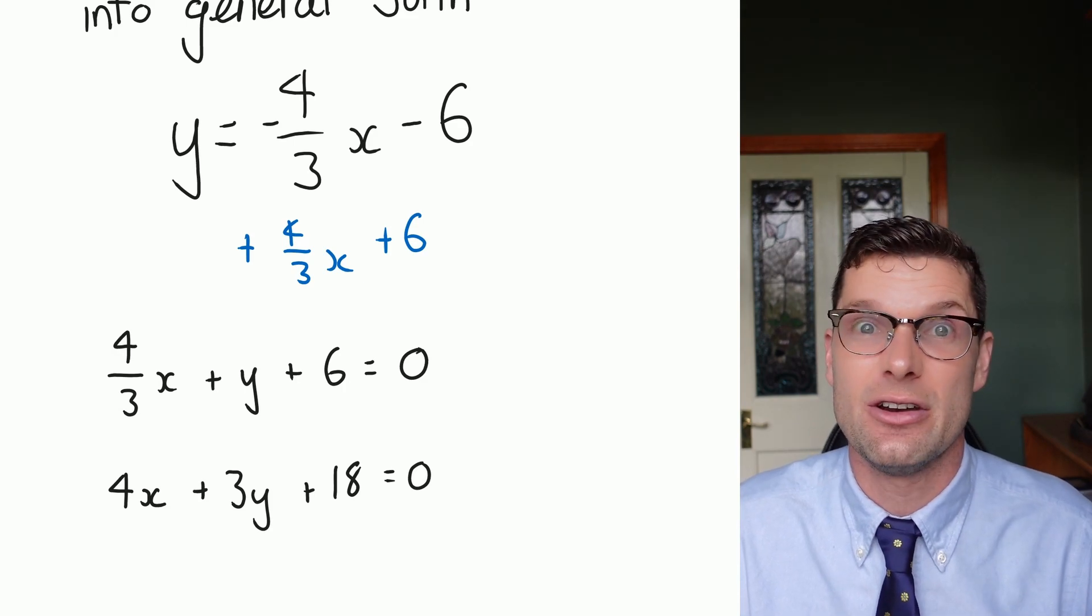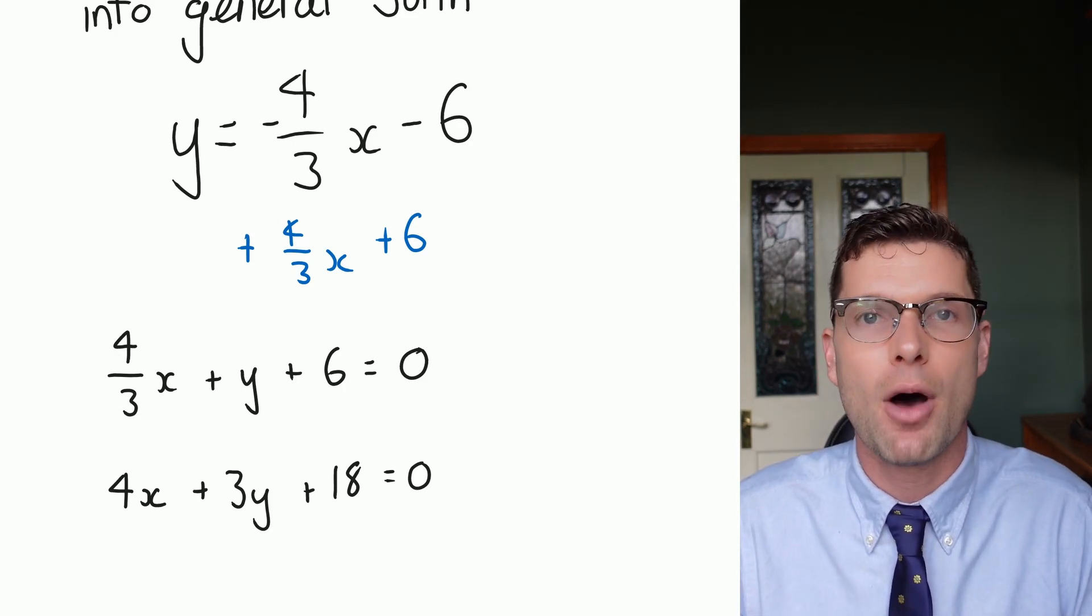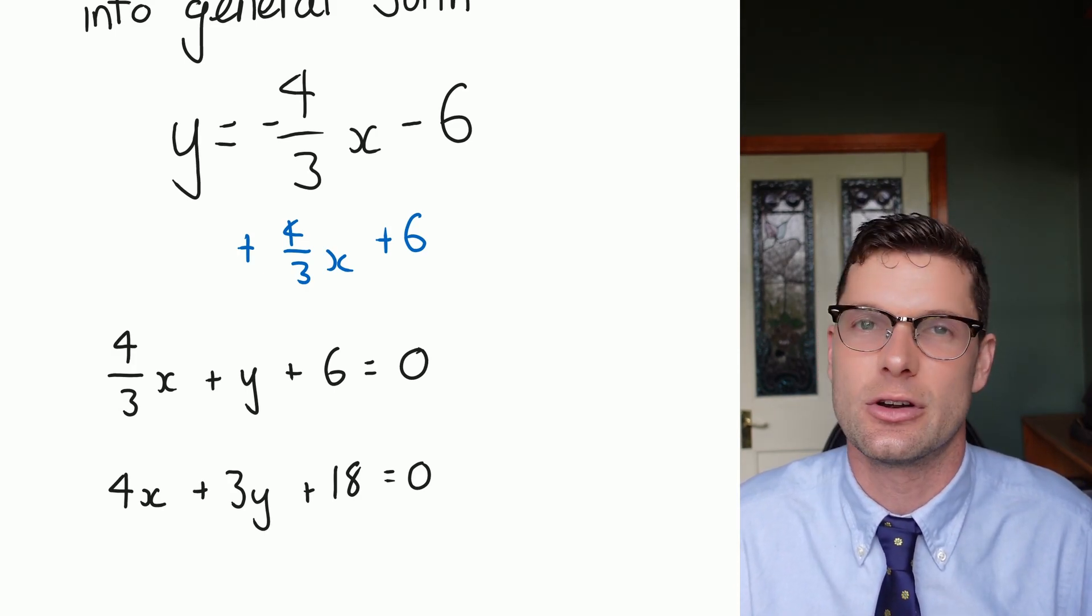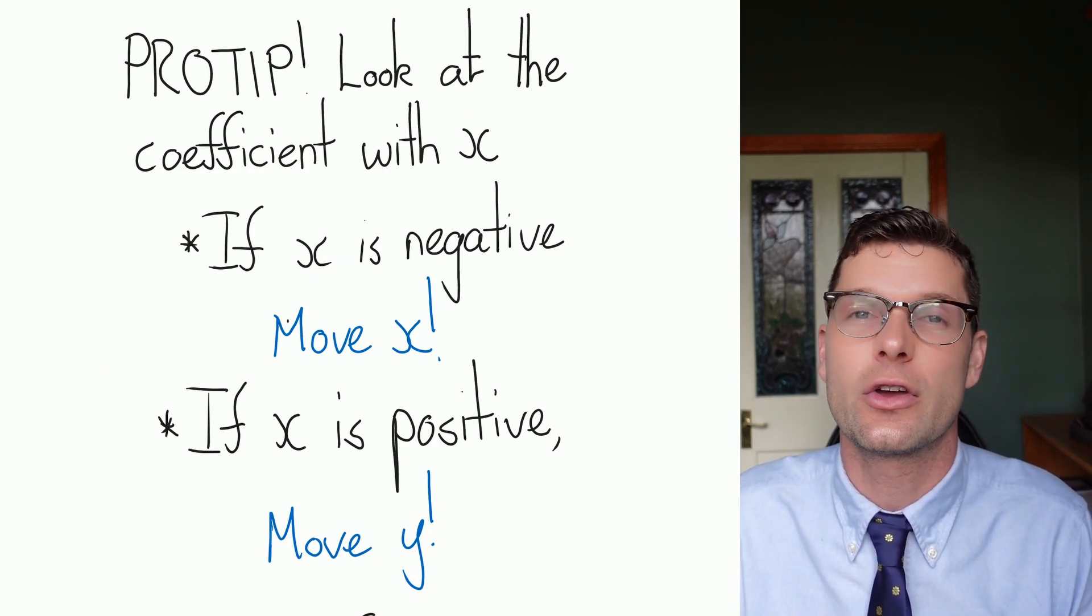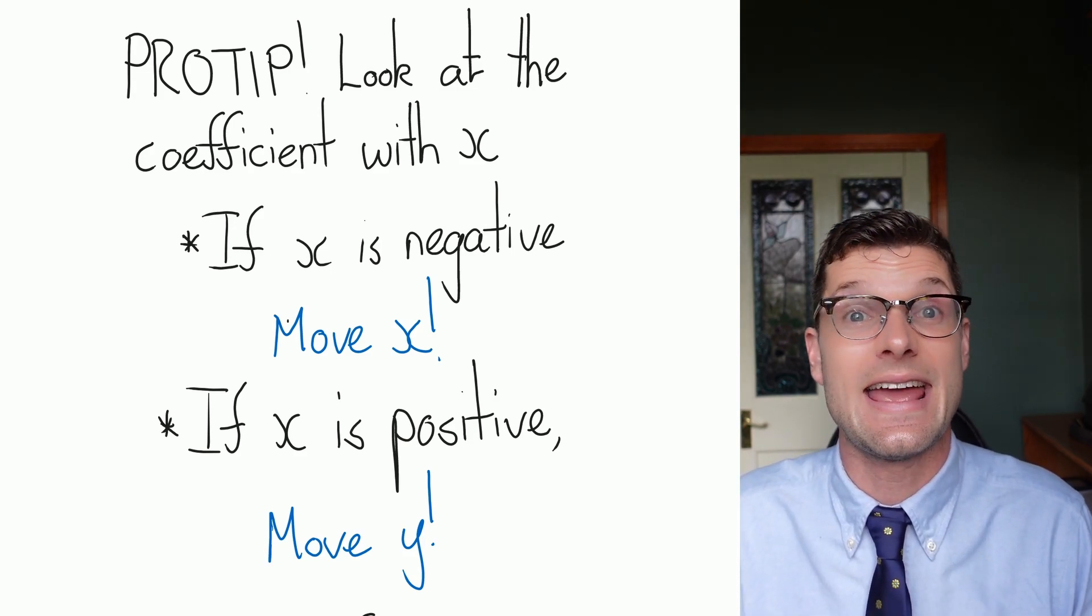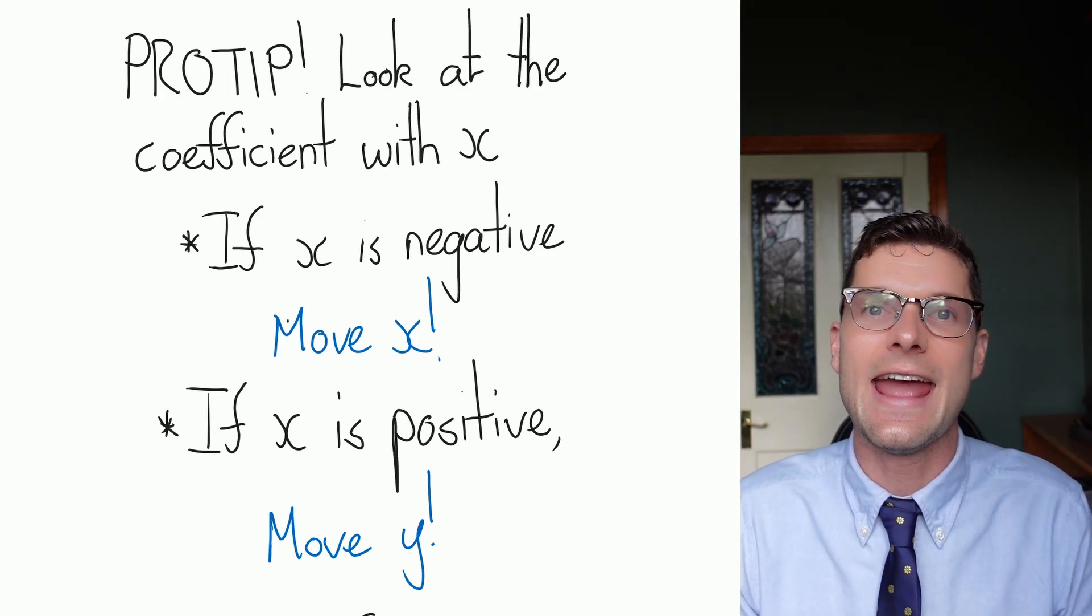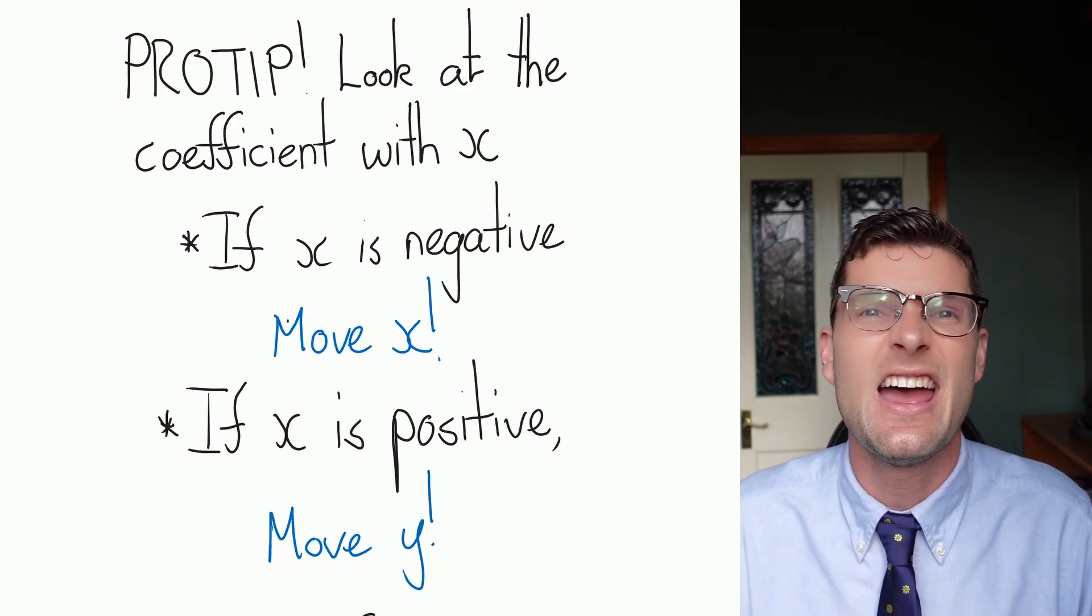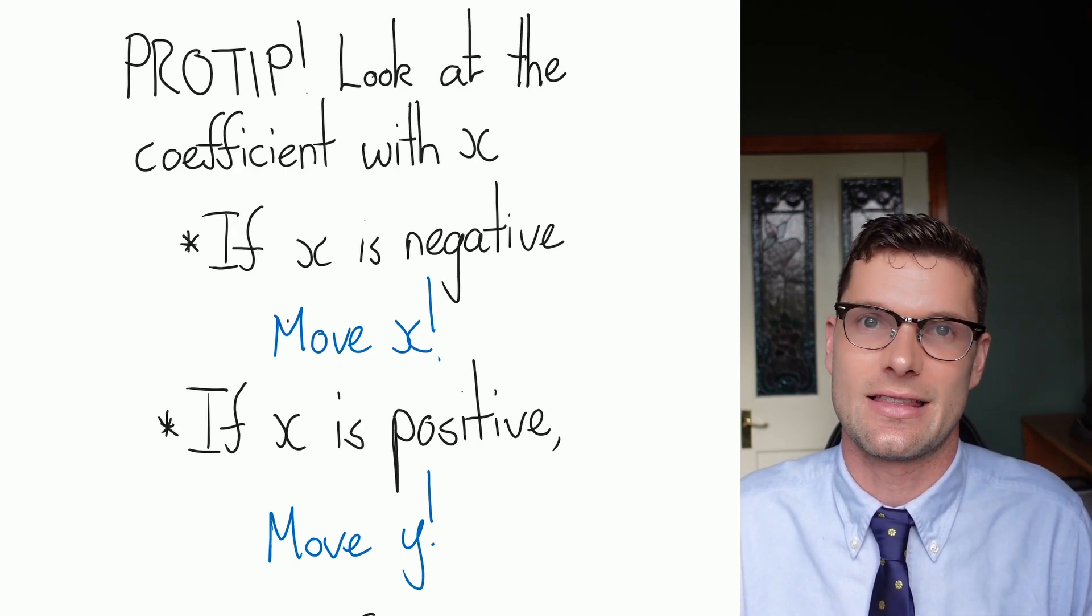So the working out for these questions is not very difficult at all. As long as you can move terms from one side to the other and multiply through by the denominator of a number, you're going to be super easy. So my big pro tip for this whole topic is to make sure you're looking at the term or the coefficient with the x at the start of the question. If that x term is negative, like we did in that first example, I want you to move the x term so it's positive. So you can add everything over to that other side. This just makes sure that you're not going to be left with a negative answer and lose a mark just like that.